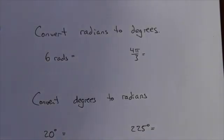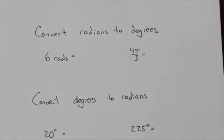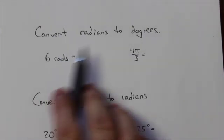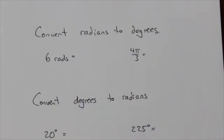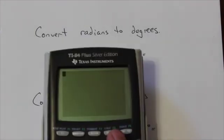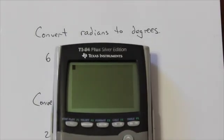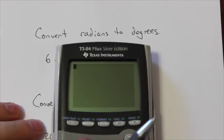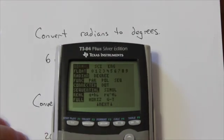Hi everyone. What I'm going to show you right now is how to use your calculator to make some conversions. The first thing we're going to do is convert from radians to degrees. To do that using your calculator, we first need to make sure the calculator is in the mode that we're converting to — so we're going to make sure that we're in degree mode.